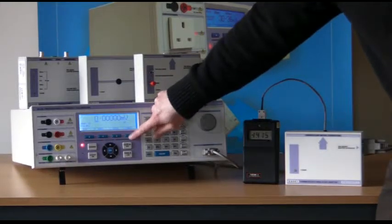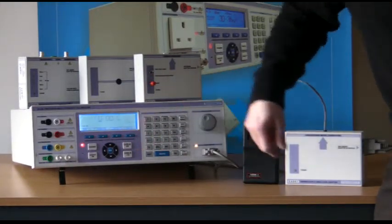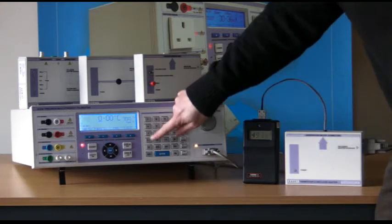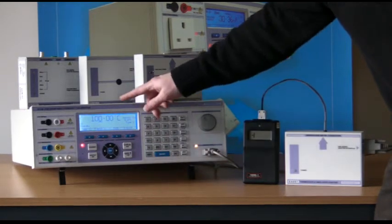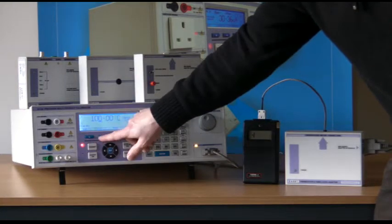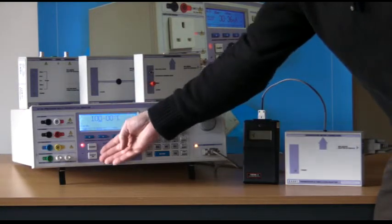Select the Thermocouple Simulation Mode on the calibrator soft keys, enter the desired temperature, select Auto or Manual cold junction, followed by the Output On key.